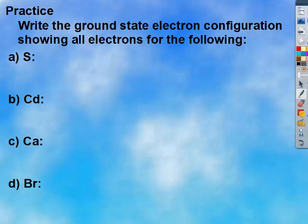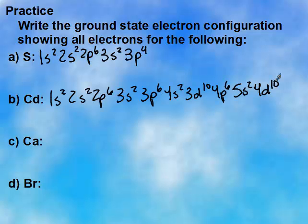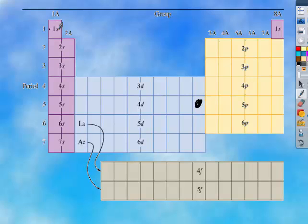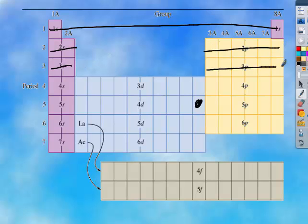Go ahead and do cadmium, calcium, and bromine on your own. That's your answer for cadmium. Cadmium was here, so we went through the 1s, then 2s, 2p, 3s, 3p, 4s, 3d, 4p, 5s, and finally 4d. It was 1, 2, 3, 4, 5, 6, 7, 8, 9, 10. So that's why it's 4d10.